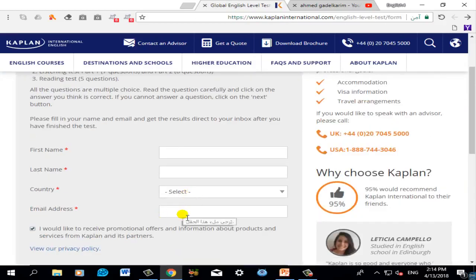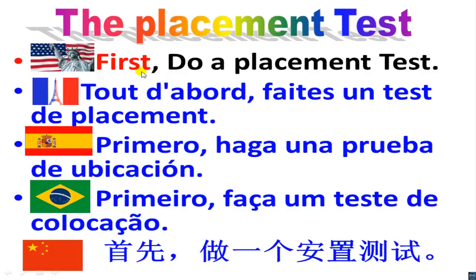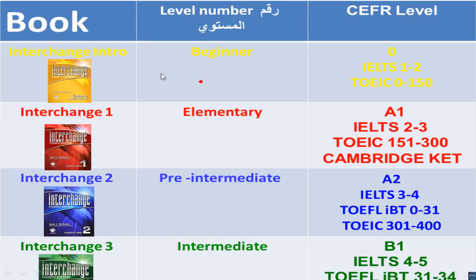They will send you the result to your email address. Based on your placement test result: if you are a beginner, use Interchange Intro — that means zero level. If you are elementary, use Interchange 1, which is level A1. If you are pre-intermediate, use Interchange 2, which is level A2.